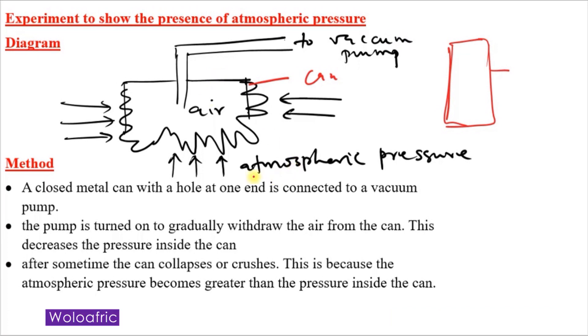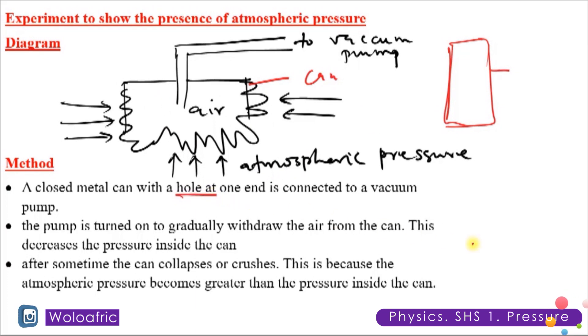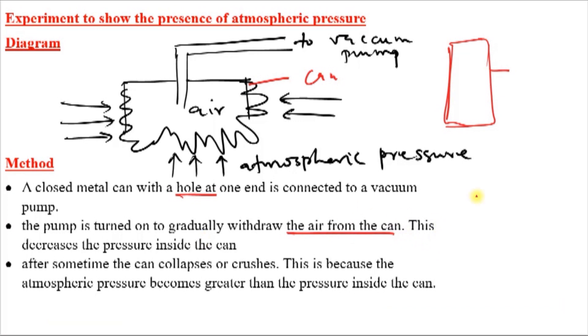And after everything, that is the shape you are going to see. So a closed can with a hole at one end is connected to the vacuum pump. The pump is turned on gradually to withdraw the air from the can, and this decreases the pressure inside the can.